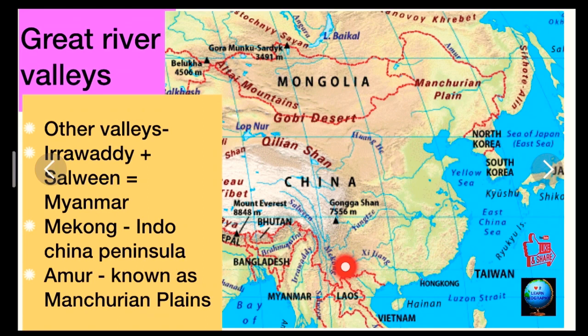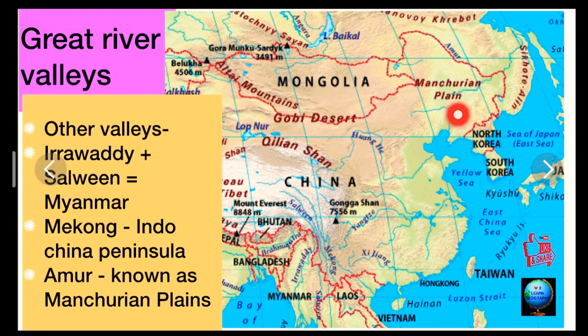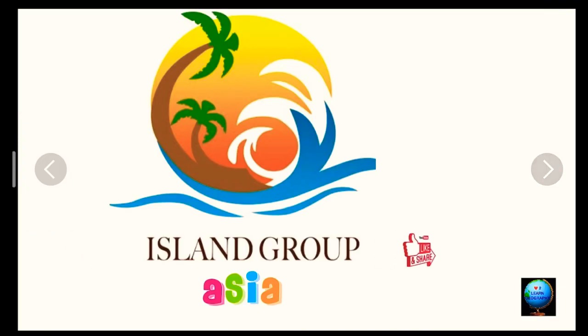Other valleys include the Irrawaddy and Salween, located in Myanmar; the Mekong, located in the Indochina Peninsula; and the Amur, known as the Manchurian Plains. These are the other important river valleys of Asia. In the next video, we will be learning about island groups of Asia. Bye bye.